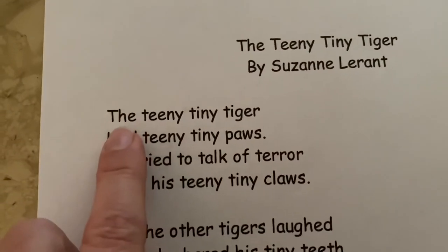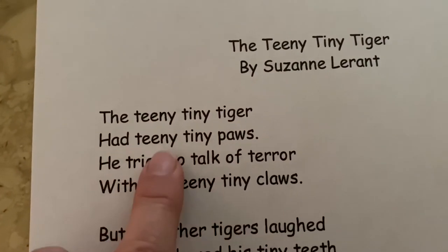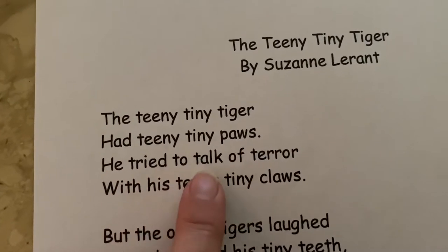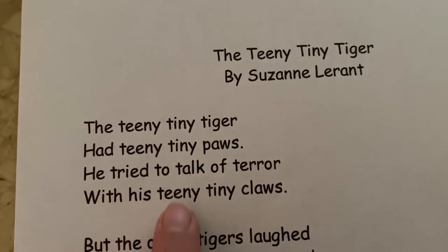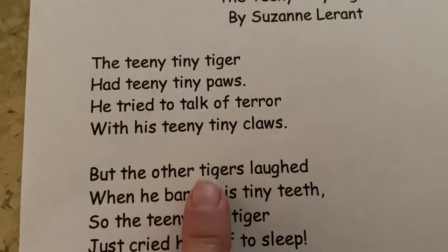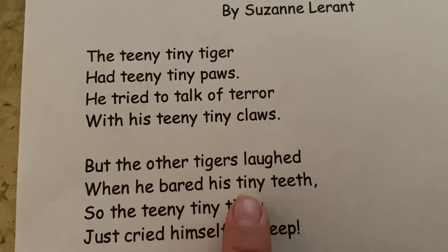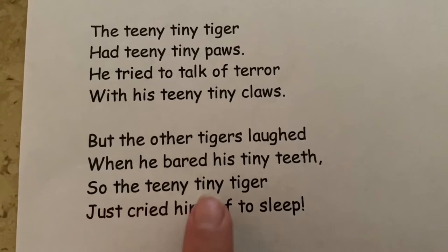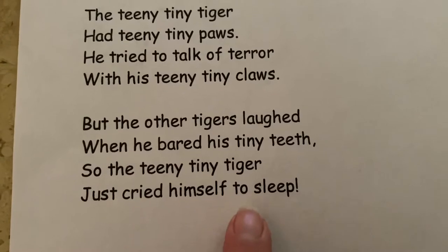And it says: the teeny tiny tiger had teeny tiny paws. He tried to talk of terror with his teeny tiny claws. But the other tigers laughed when he bared his tiny teeth. So the teeny tiny tiger just cried himself to sleep.